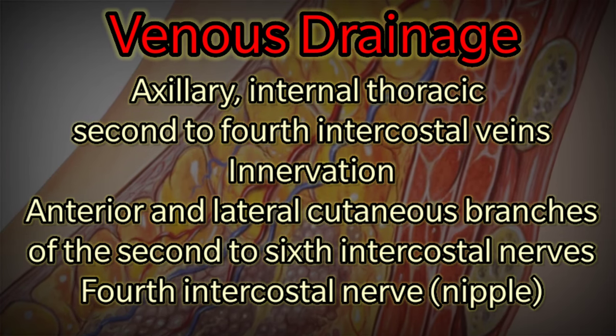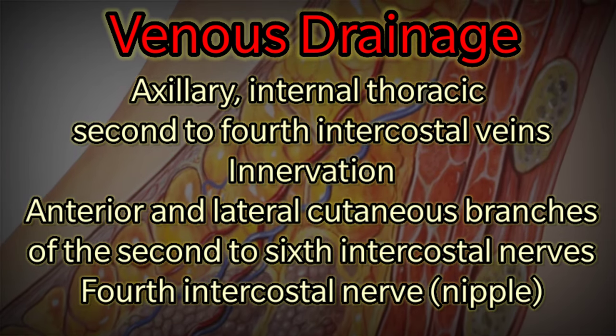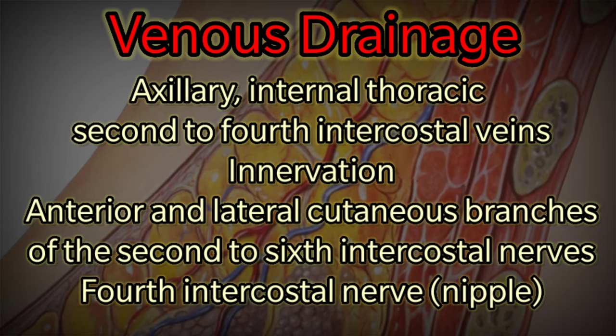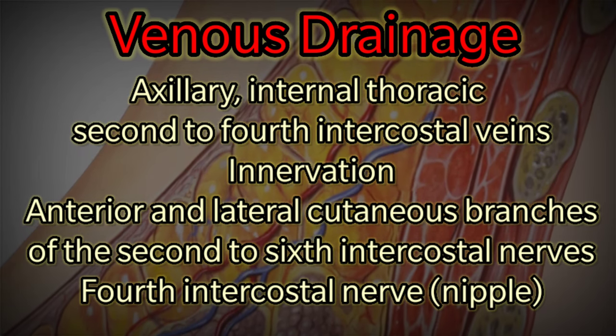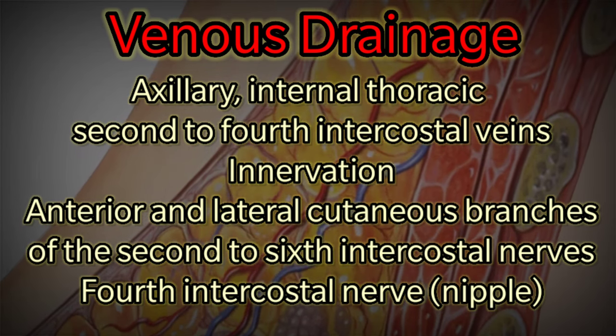Innervation is provided by the anterior and lateral cutaneous branches of the second to sixth intercostal nerves, with the fourth intercostal nerve supplying the nipple.